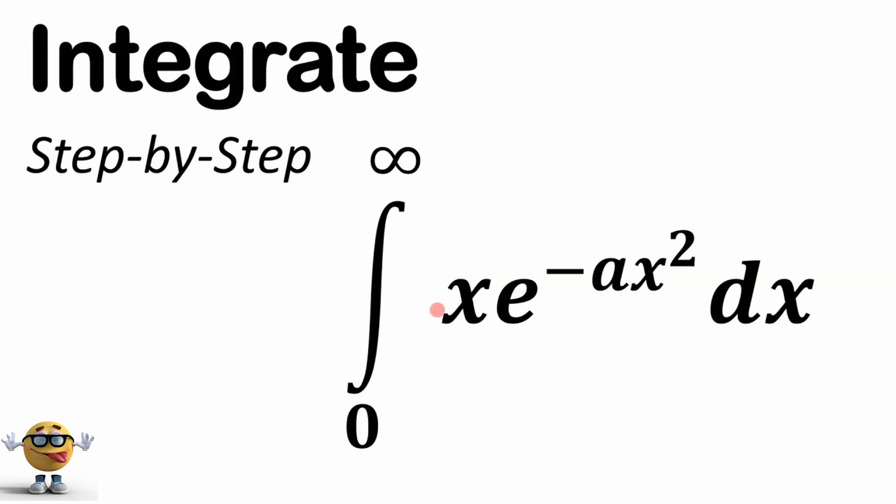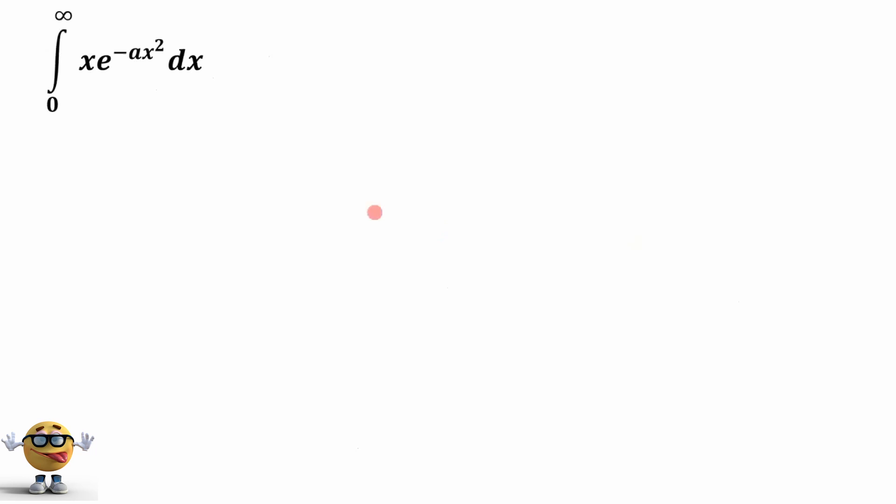All right, again, we're going to evaluate the integral of x times e to the negative ax squared from 0 to infinity. This is a Gaussian function. It's going to be short and it's going to be awesome. Just note, I got many modifications of this type of function integrating it, so check those out.